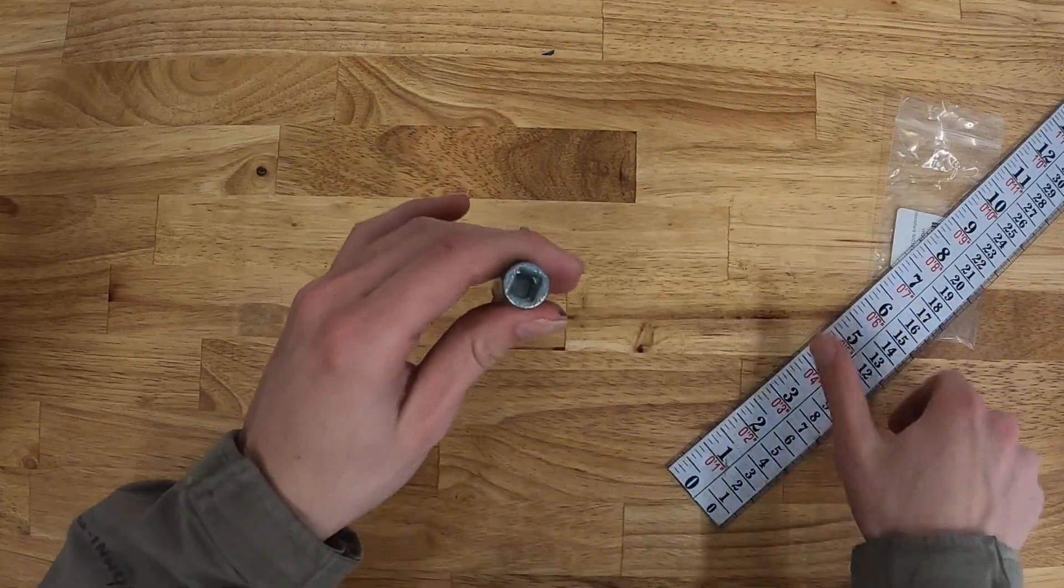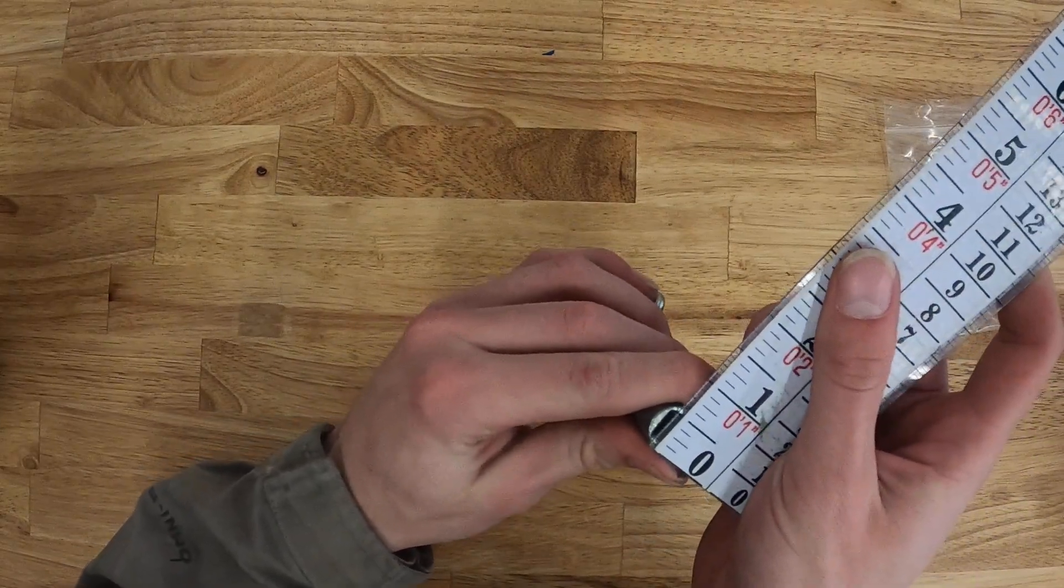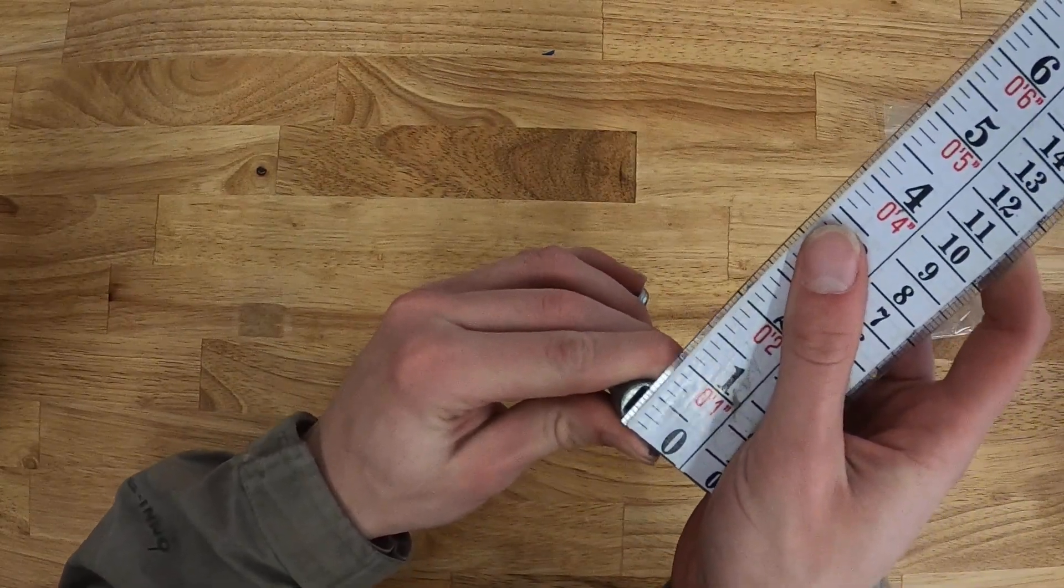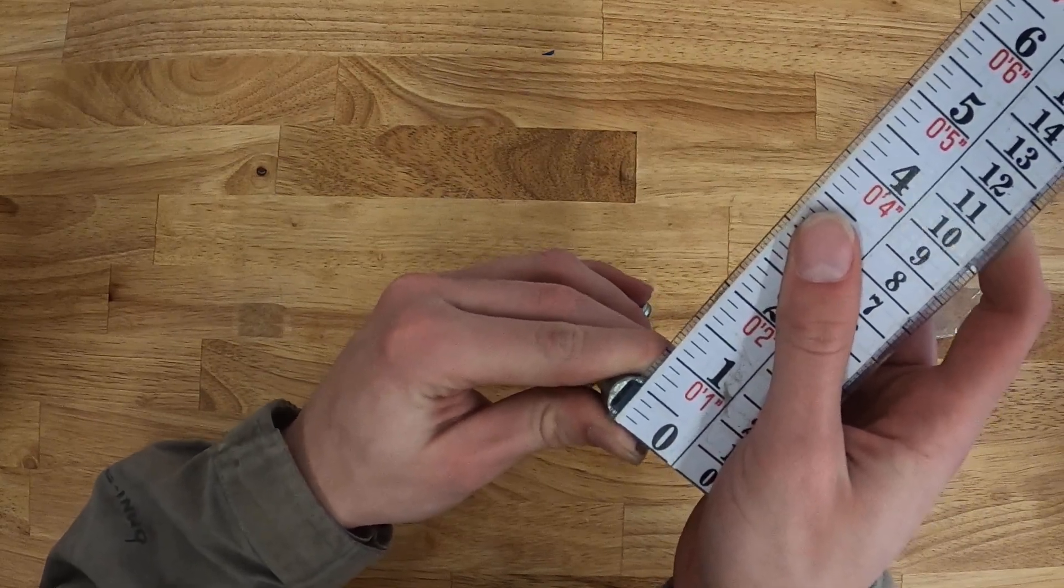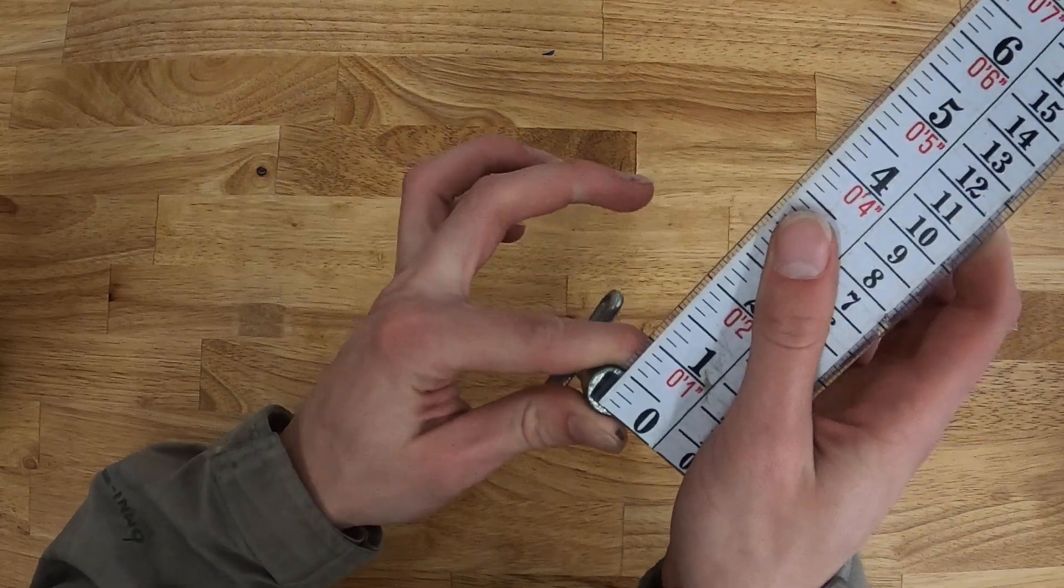Then we'll get an outer and inner diameter of the square here. Outer diameter is right above half an inch, with the inner diameter right below half an inch.